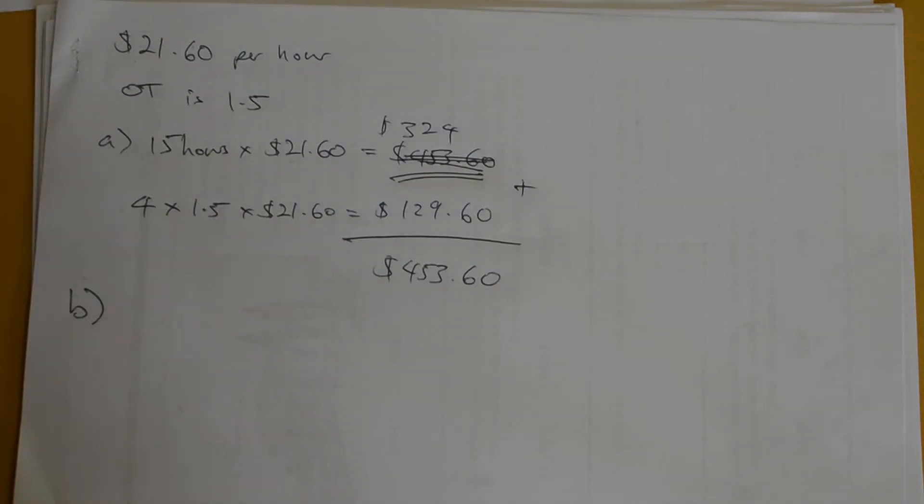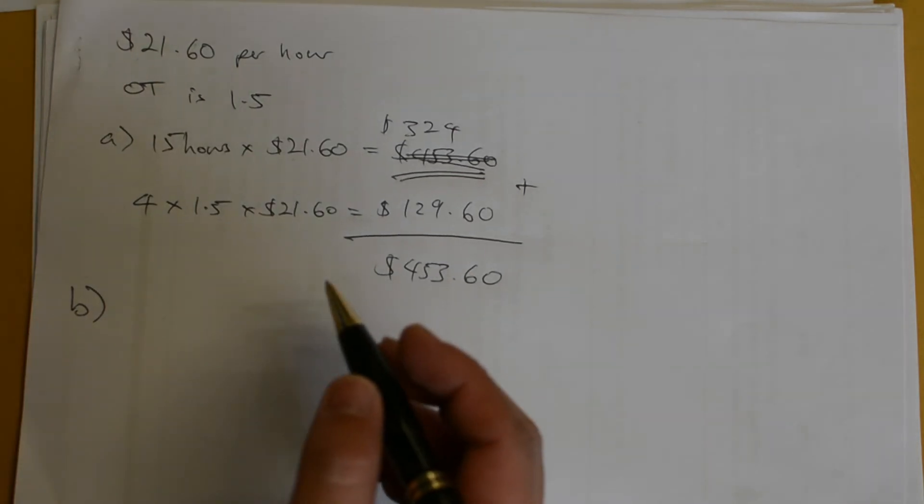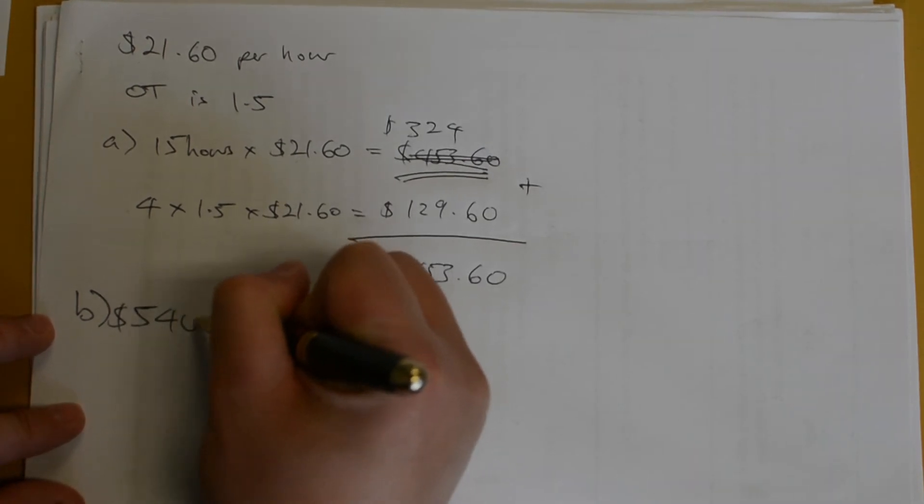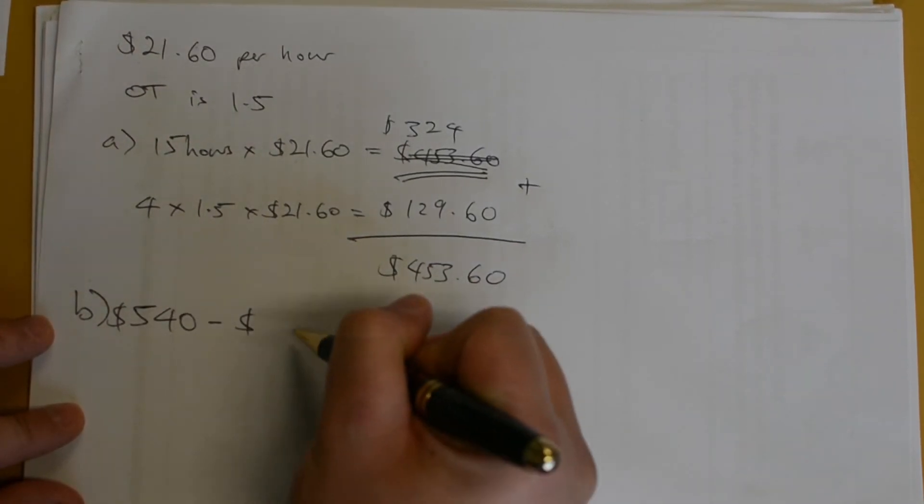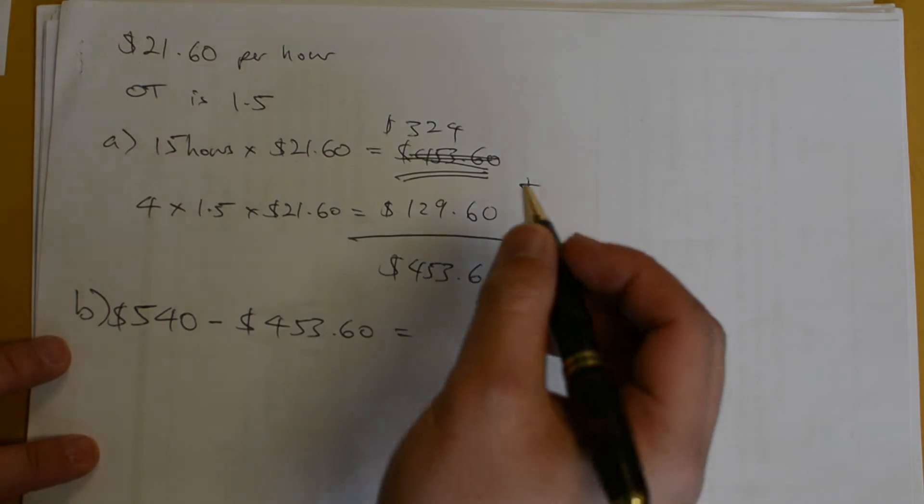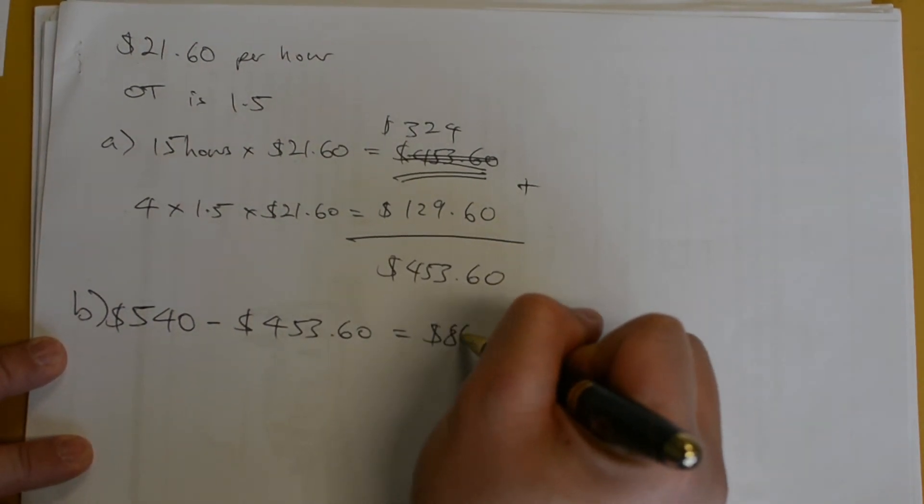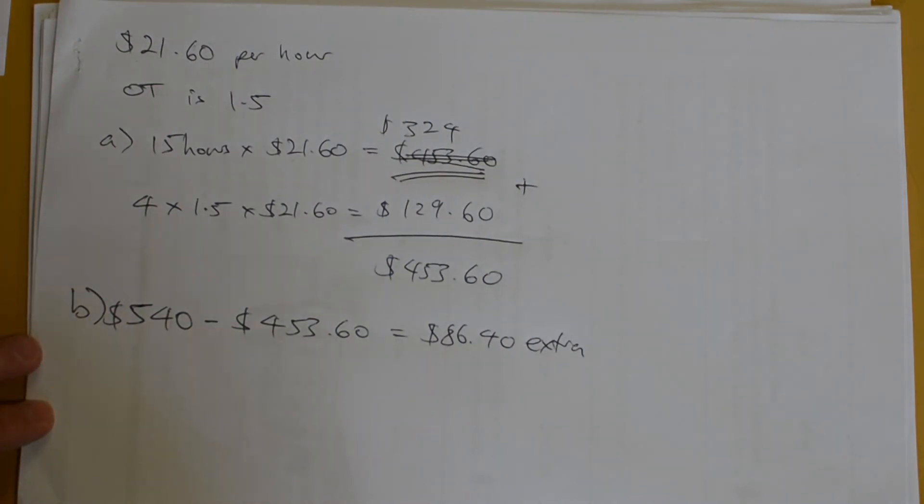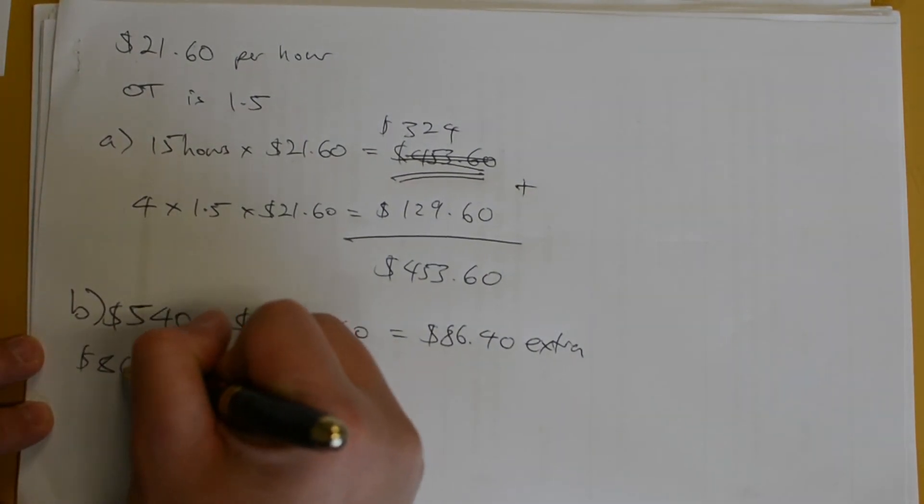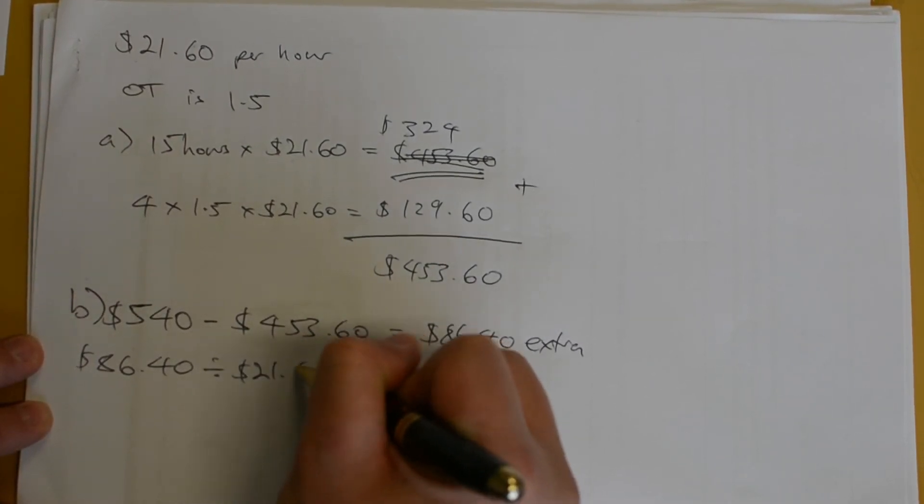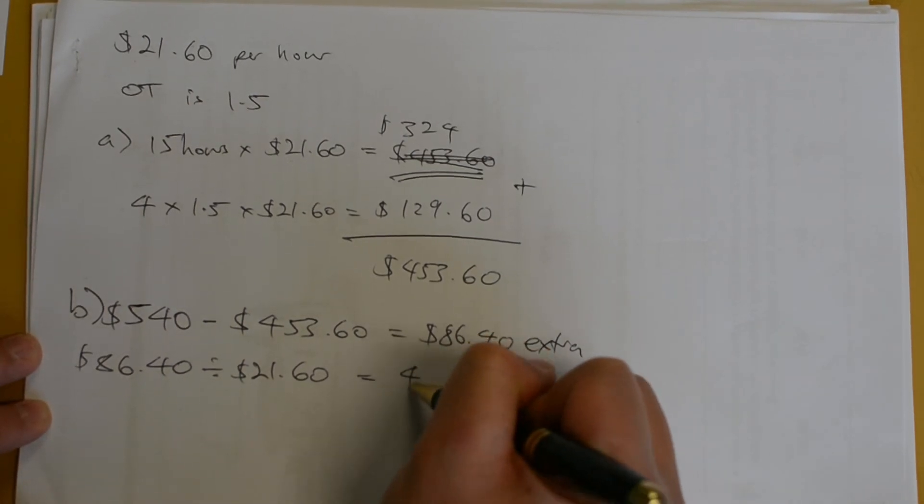Writing this down, we need to find the difference. So, he wants to earn $540. We're going to first take away his normal wage, $453.60, and that will be $86.40 extra. Now, he wants to work at his normal rate. So, we will divide this extra amount by his normal rate, $21.60, and we'll get 4 hours.